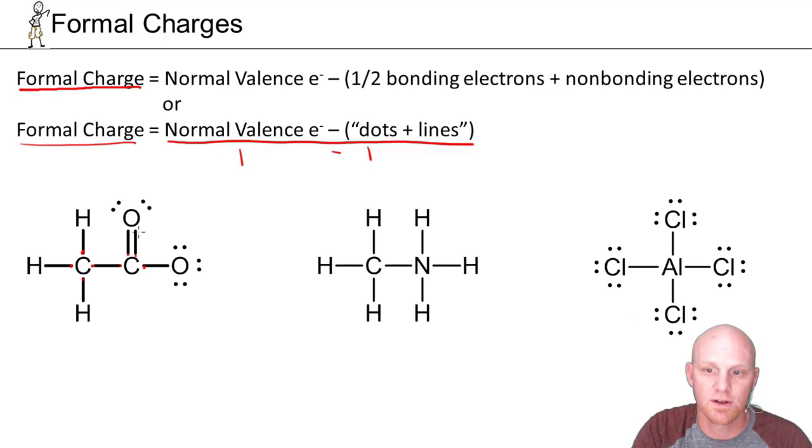So the oxygen up top, his normal number of valence electrons is six, six minus two lines, and one, two, three, four dots. Six minus six is zero, no formal charge there as well.